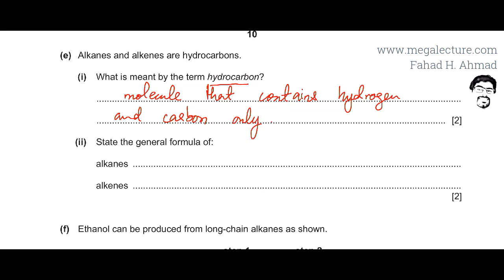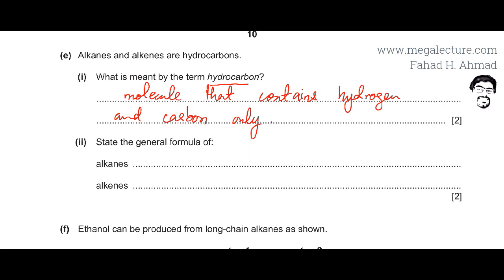You are being asked the general formula of alkanes. Alkanes are saturated hydrocarbons containing only single bonds between carbon and hydrogen atoms. Alkenes, on the other hand, are unsaturated hydrocarbons that contain carbon-carbon double bonds. The general formula of alkanes is CnH2n+2, and the general formula of alkenes is CnH2n.